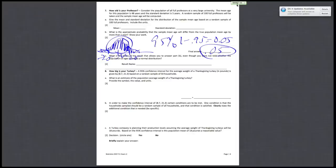Lastly, part C: what is the name of the result that allows you to answer part B, even though you were not told whether the population of ages followed a normal distribution? Well, that's just the central limit theorem. That's just something you had to recognize. Central limit theorem. All right, so let's move on to question 8.